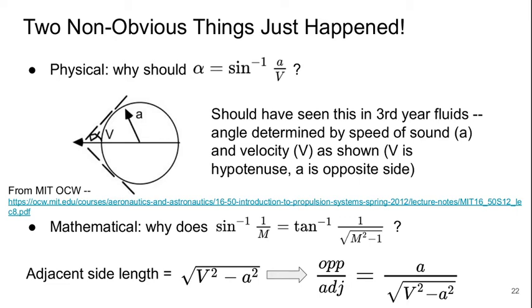So physically, why should it be the case that the Mach wave angle alpha is the sine inverse of one over the Mach number or A over V. So you should have seen this, I hope, in third year fluids where you would have learned a little bit about supersonic flows. Basically, this Mach wave angle is determined by the speed of sound A and the velocity V, so basically V is the hypotenuse of this triangle, A is the opposite side, and the Mach wave is perpendicular to A.